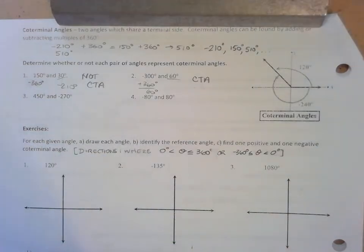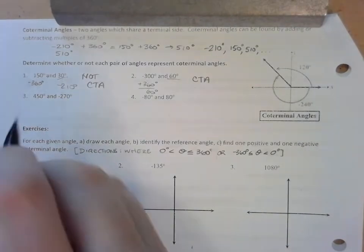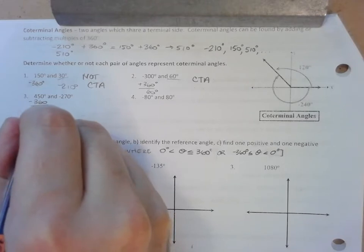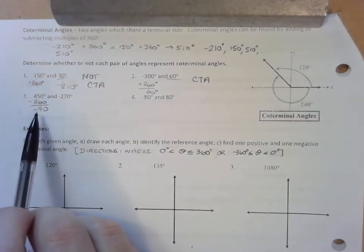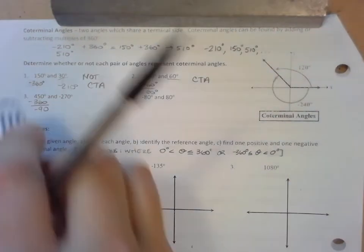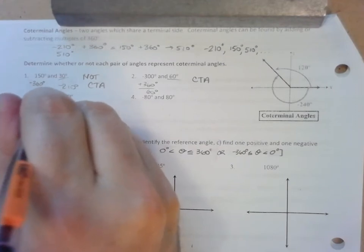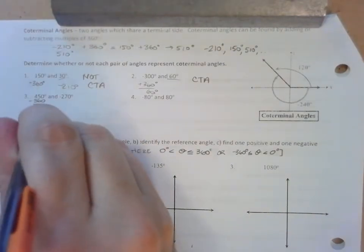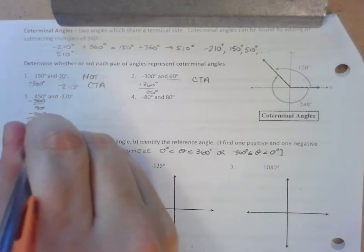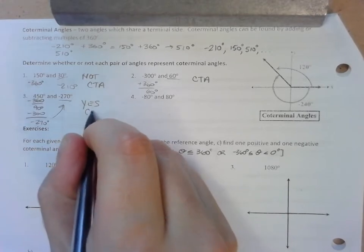Let's do questions 3 and 4. For question 3, let's add and subtract 360. I don't want to add — that will get me farther away from the second angle — so let's subtract. Excuse me, I didn't recognize that 450 was positive. Let's subtract 360: I get positive 90. Subtracting 360 again gives me negative 270 degrees. Since it matches, yes, these are coterminal angles.